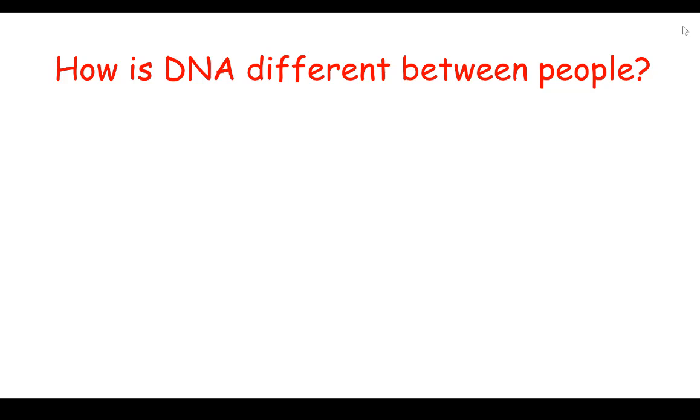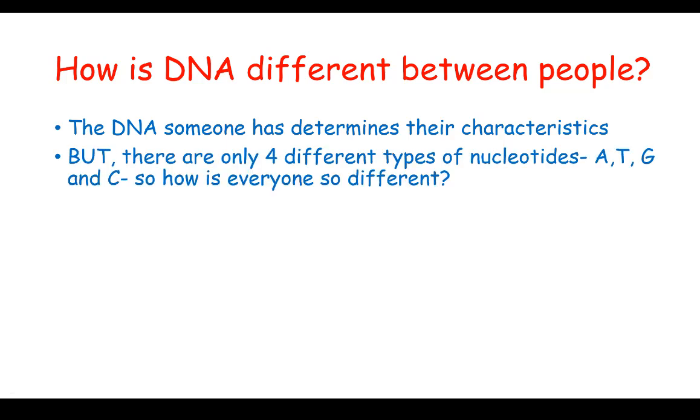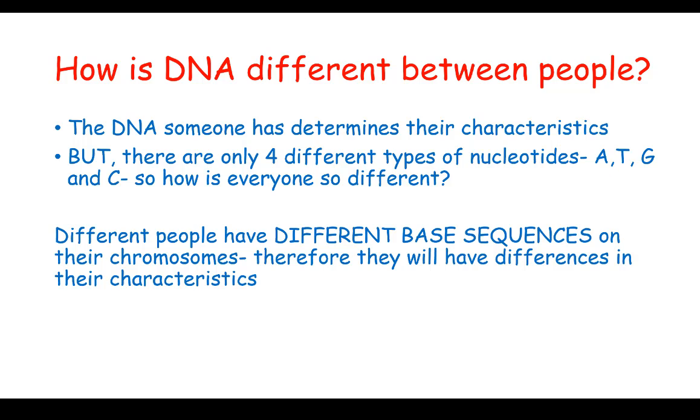Now what we've just found out is that there's only four different nucleotides, yet people's DNA are quite different and people look very different from each other. So how is DNA different from different people? We're saying that the DNA someone has determines their characteristics, but there are only four different types of nucleotides: A, T, G, and C. So how is everyone so different? This is because different people have different base sequences on their chromosomes. Therefore, they will have differences in their characteristics.